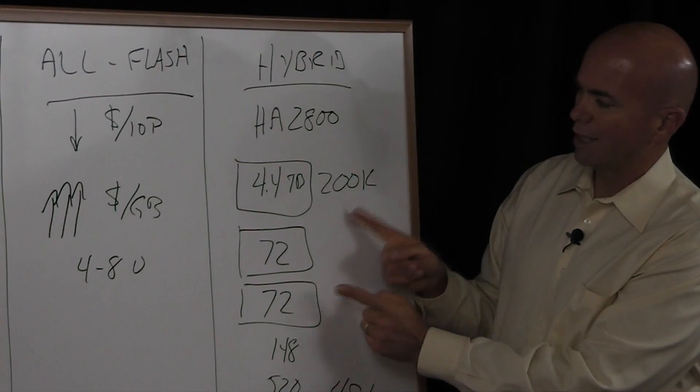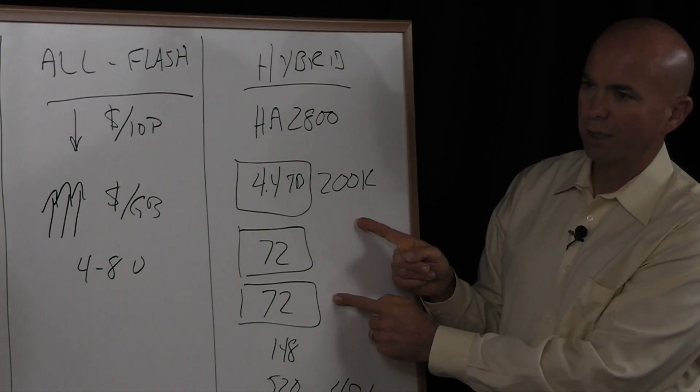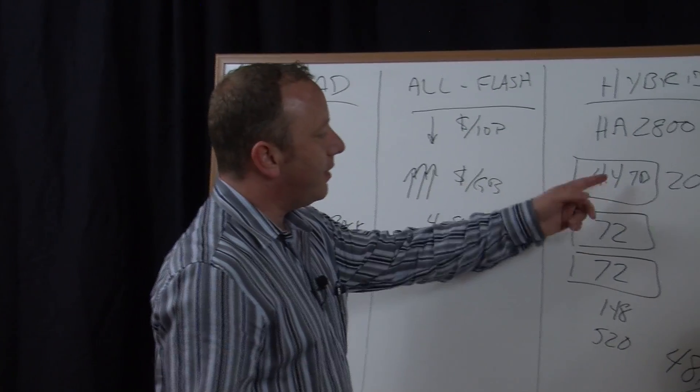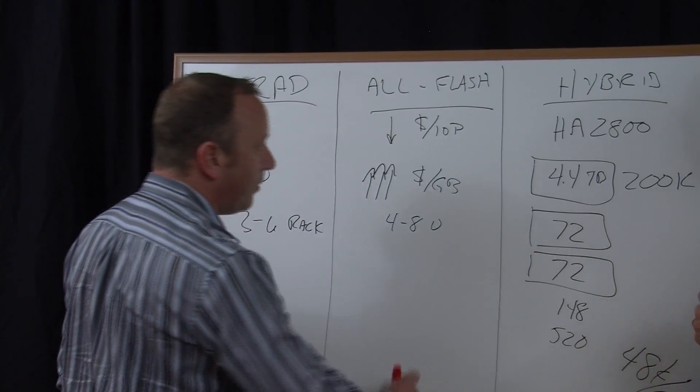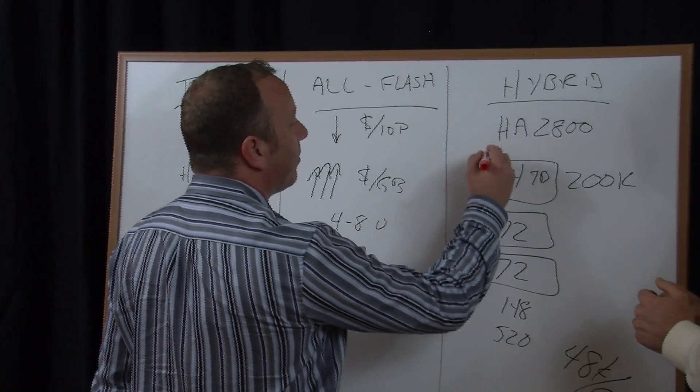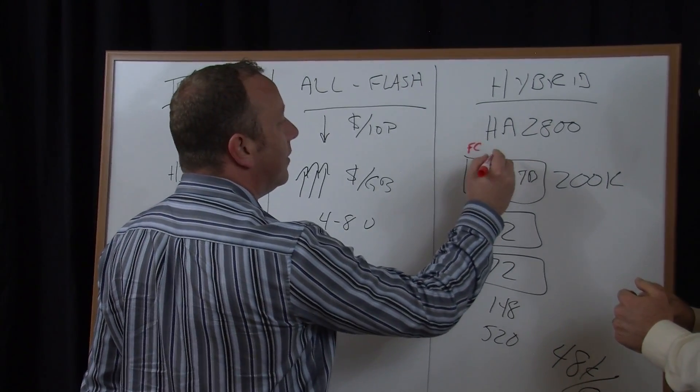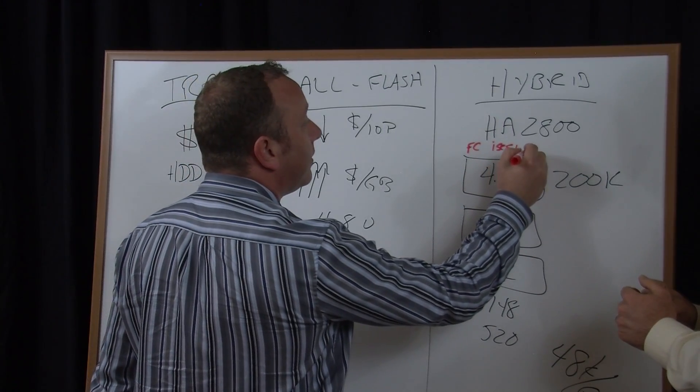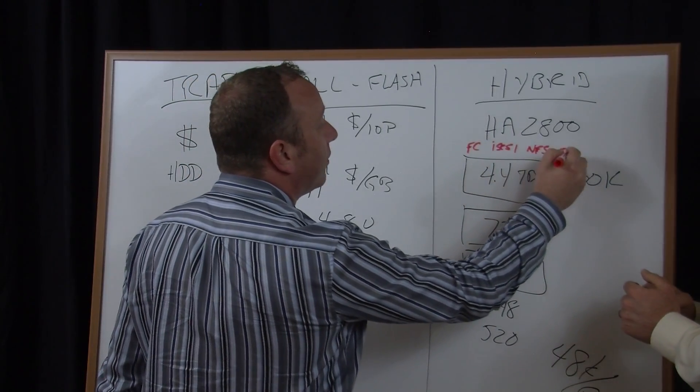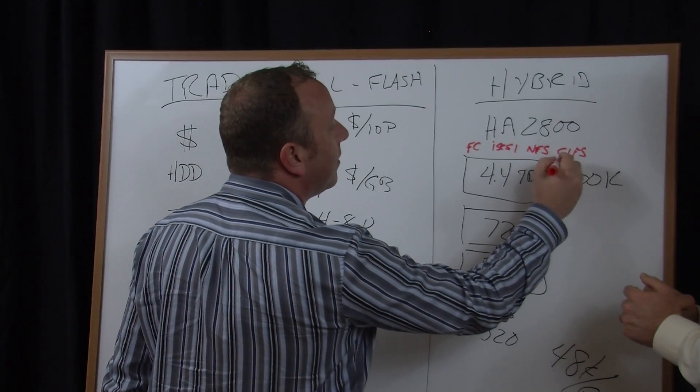And then what's the connectivity options on this unit? Internally, these connect via a SAS backend. But externally, we have a very nice multi-protocol stack that customers connect over Fiber Channel, iSCSI, NFS, or CIFS, or it's like people like to call SMB.